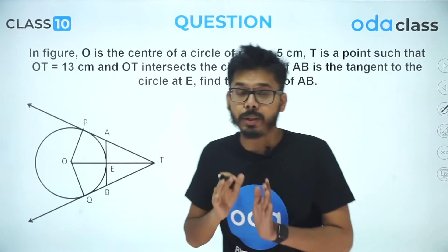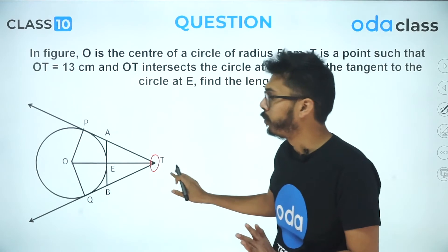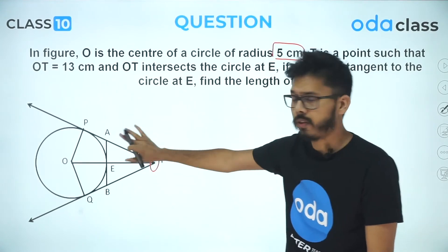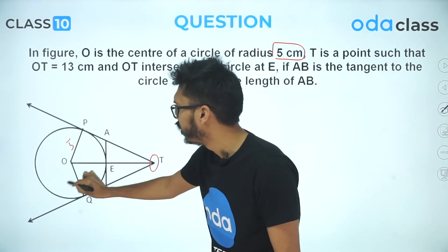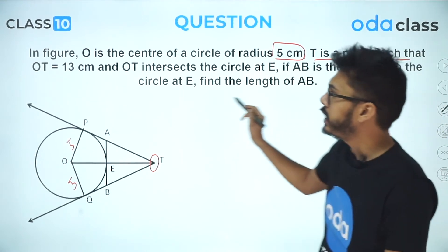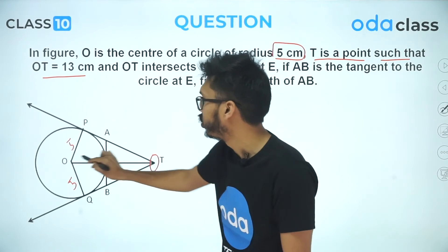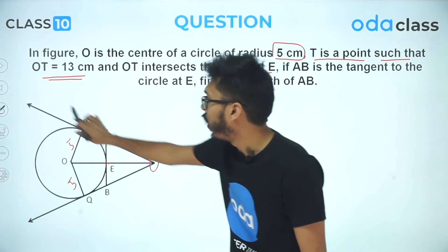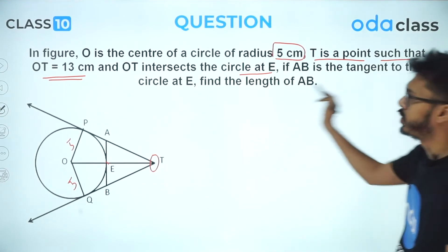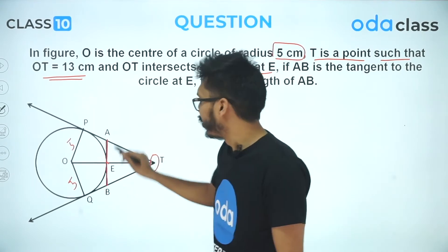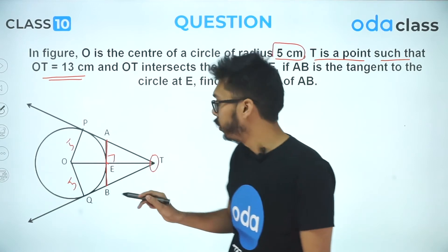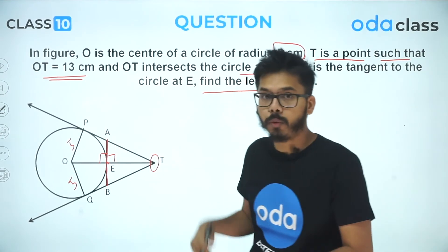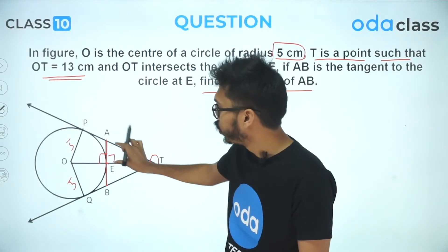The second question has a similar setup with an external point T and two tangents. O is the center of a circle of radius 5 centimeters, so OP = OQ = 5. T is a point such that OT = 13 centimeters. OT intersects the circle at E. AB is a tangent to the circle at E, so the angle at E is 90 degrees. We are supposed to find the length AB. I'll divide AB into two parts AE and BE.